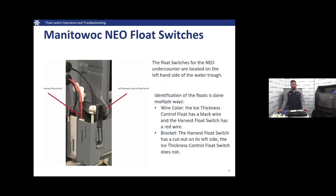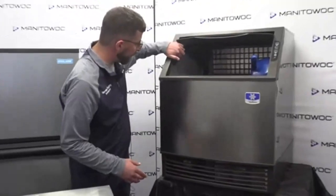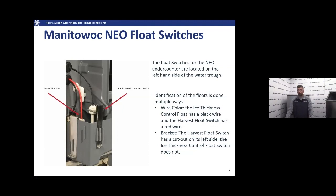The floats on the NEO are located in the water trough, on the left side of that water trough, as shown on screen. There are a couple of ways to identify these. The front float — your ice thickness control float — has a black wire coming out of it, and the bracket does not have a notch on the sides like the harvest float switch. The harvest float switch has a little cutout to lock it in place. It also has a red wire coming off the top going through the bulkhead. Those are the main ways to identify your float switches on the NEO undercounter.